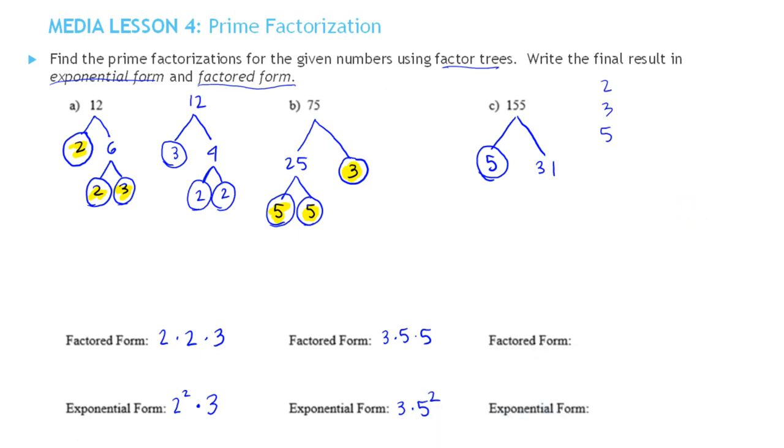So that means 31 is actually prime, so we can circle it. And this is 155's prime factorization. So we have 5 times 31. The exponential form will be identical because since there aren't any repeated factors, we wouldn't write anything with an exponent greater than 1, which we usually omit and don't write at all.